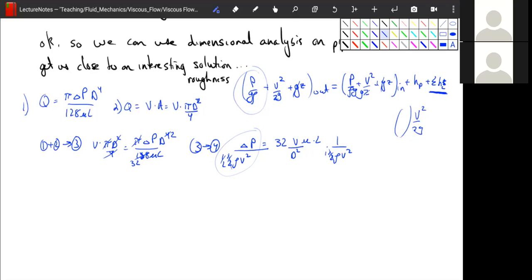1 half, 1 half. So this v is going to cancel out with this v. And we get a rho v, rho v d over mu. And that should look familiar. And we're going to pull those out and turn those into a Reynolds number.